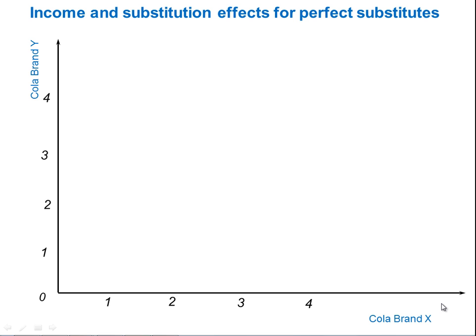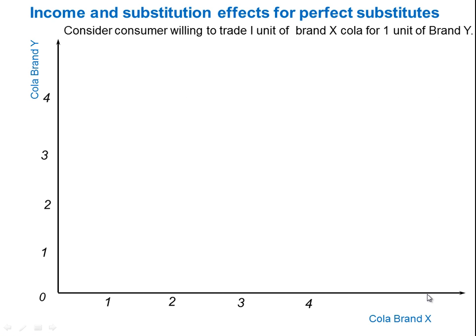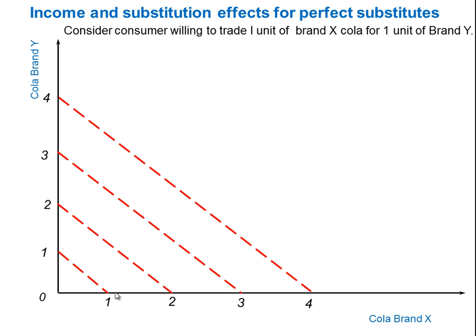First of all, let's look at what we mean by a perfect substitute. Think about a consumer who might be willing to trade one unit of brand X cola for one unit of brand Y. So one would draw the indifference curve like this. If they had one brand Y cola bottle and they wanted to get one brand X, they'd switch one for one — a one-for-one trade. If they had two brand Y, they'd give up two brand Y in order to get two brand X cola, and so on for three and four brand Y colas.